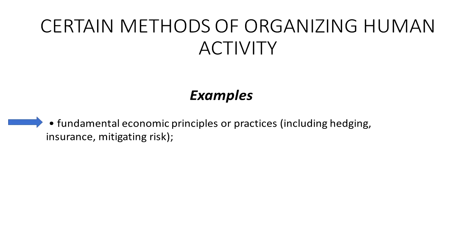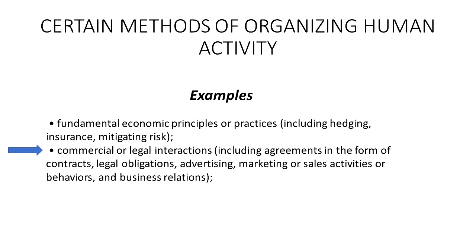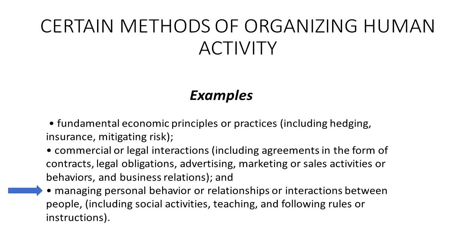In the next category, inventions pertaining to certain types of human activity can trigger such a rejection. Examples the US patent office lists include: fundamental economic principles or practices including hedging, insurance, and mitigating risk; commercial or legal interactions including contracts, legal obligations, advertising, marketing, or sales activities; and managing personal behavior or relationships between people, including social activities, teaching, and following rules or instructions.